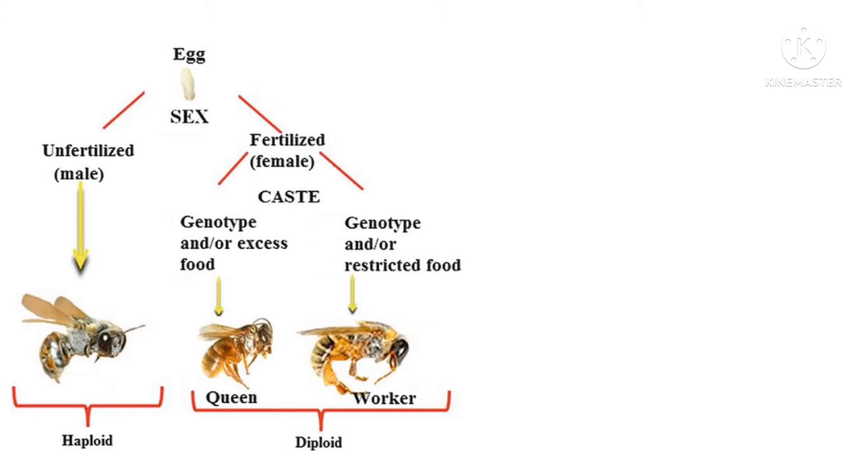The unfertilized egg develops into the male drone by the process of parthenogenesis. The unfertilized egg is later developed as the male drone by the process of parthenogenesis.